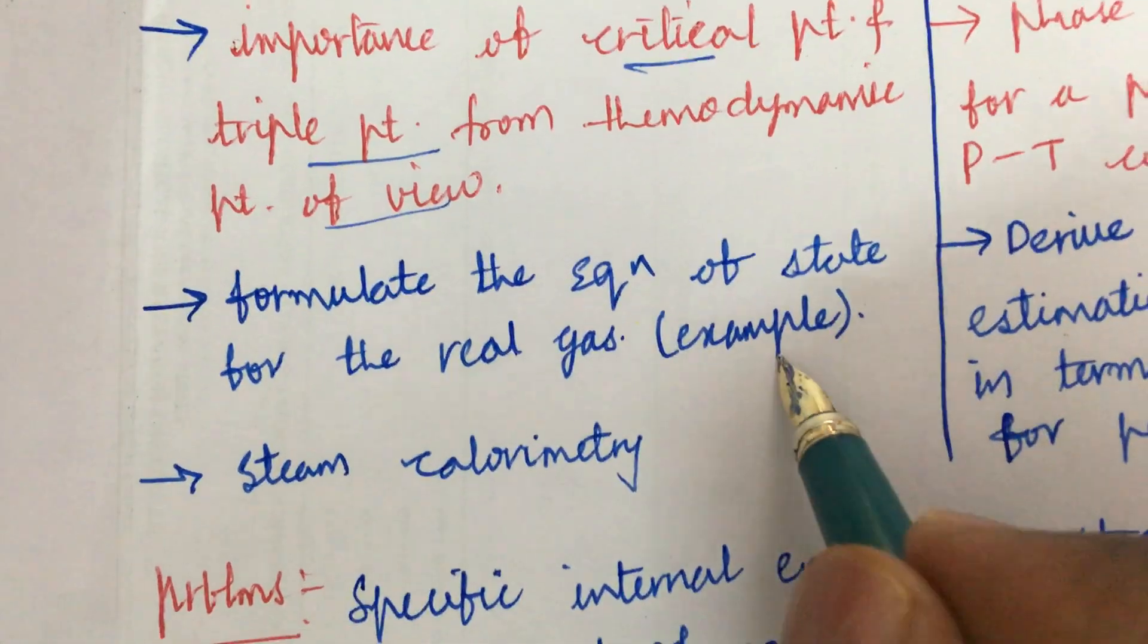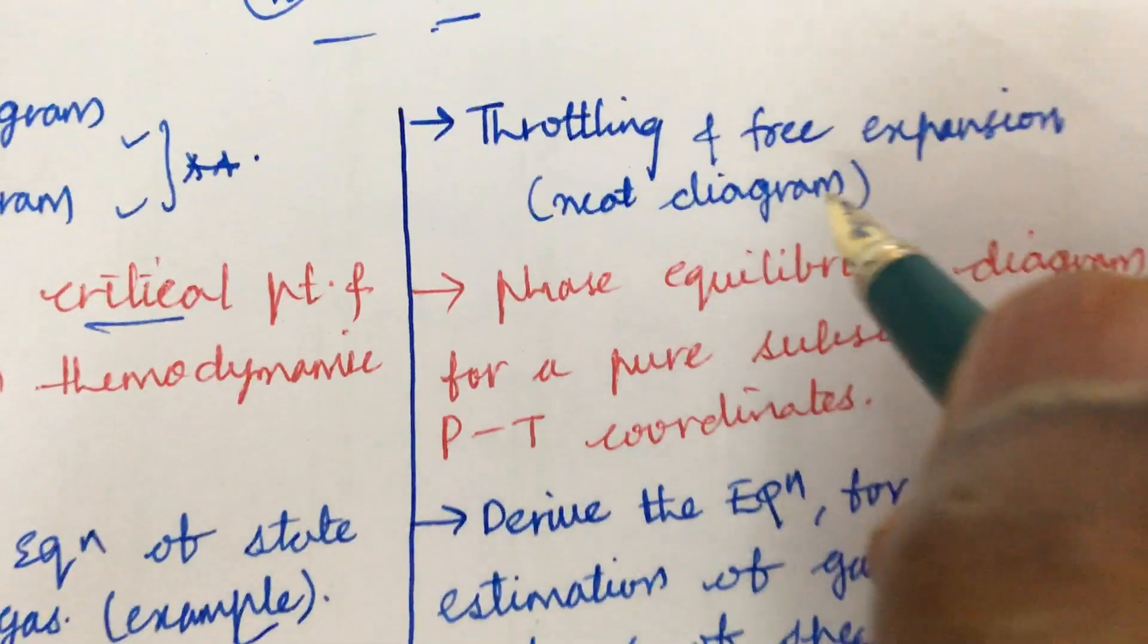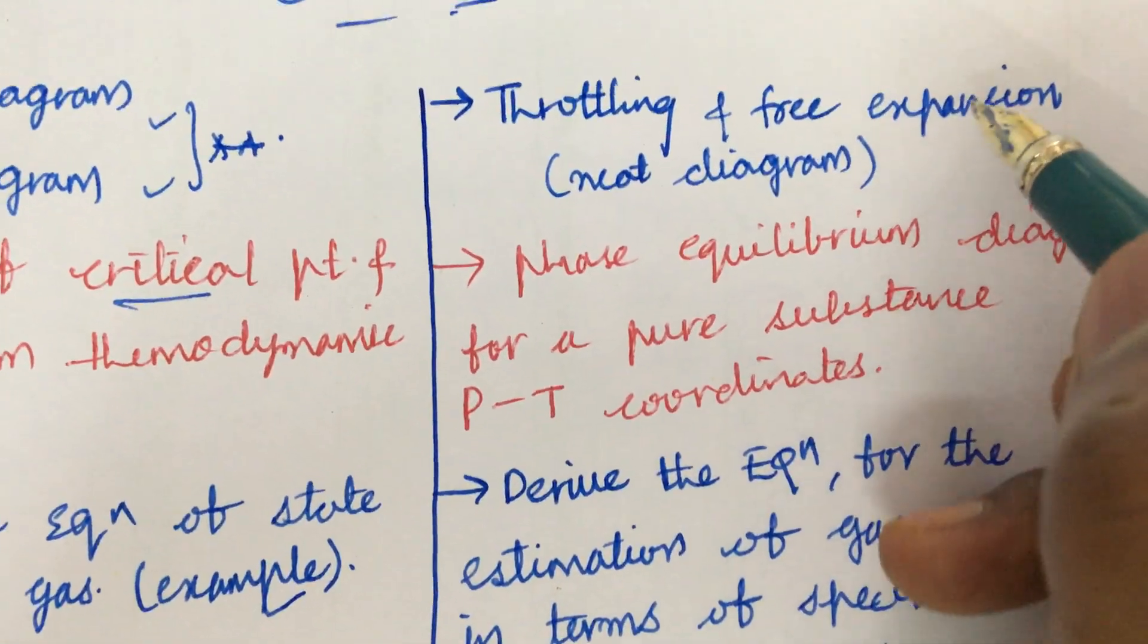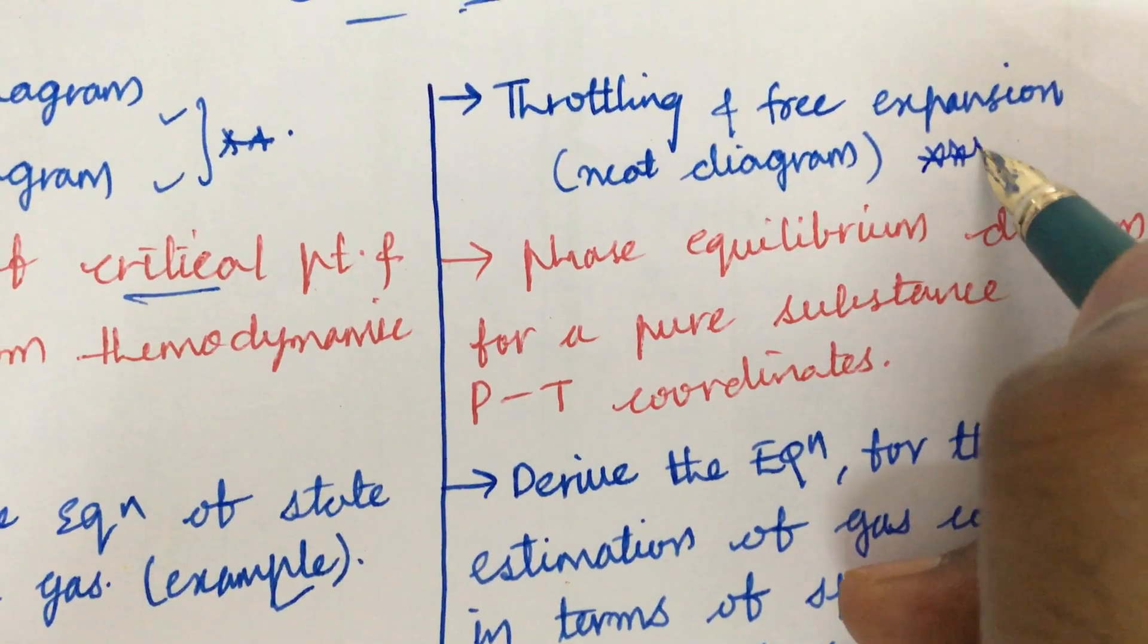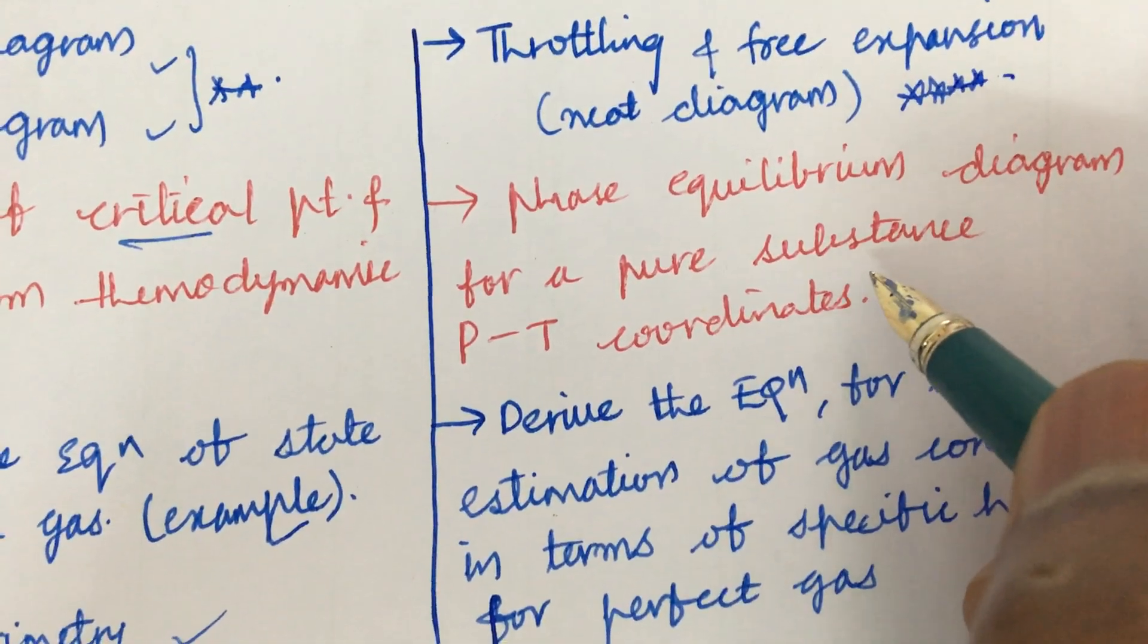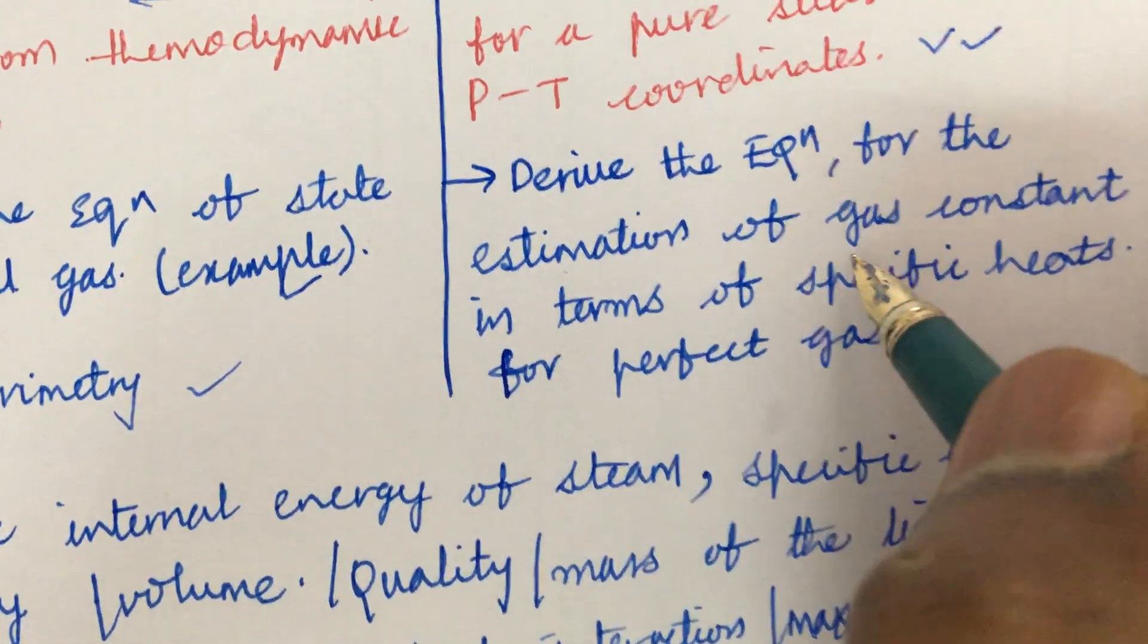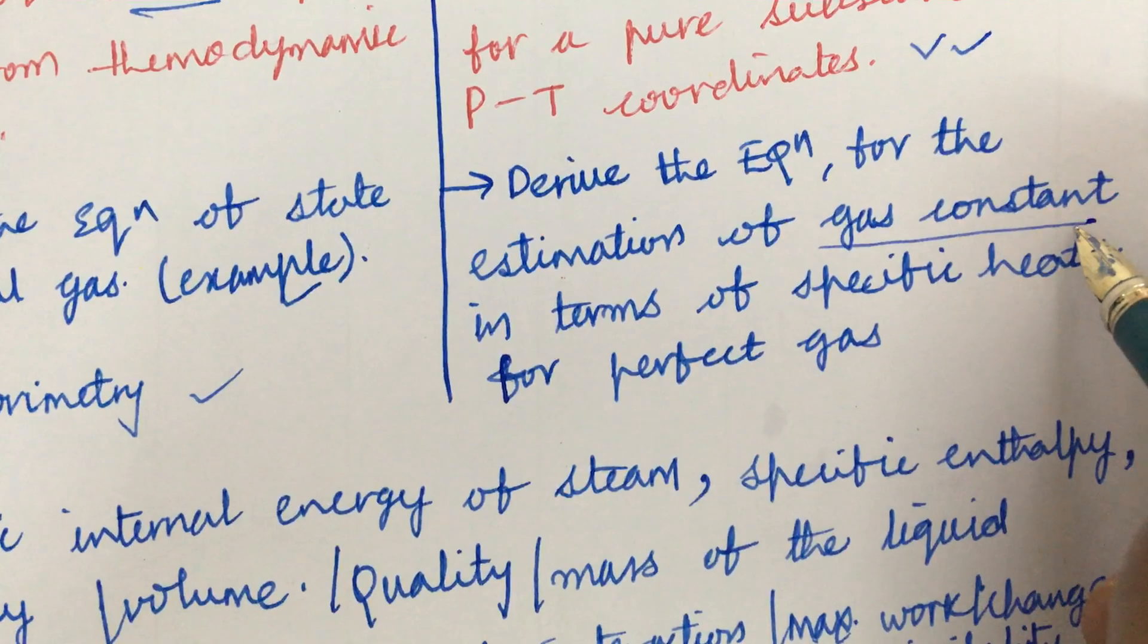Formulate the equation of state for a real gas along with the example. And steam calorimetry, as well as throttling versus free expansion along with a knee diagram is said to be one of the gunshot questions. And the phase equilibrium diagram for a pure substance and the PT coordinates, and derive the equation for estimation of gas related to the gas constant. You may be getting the problem or the derivation for sure this time.